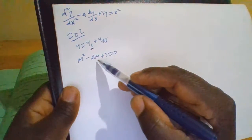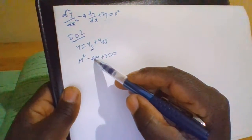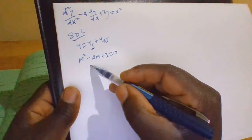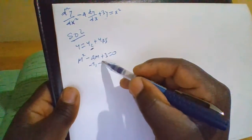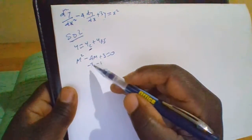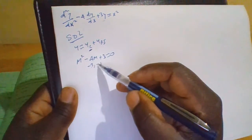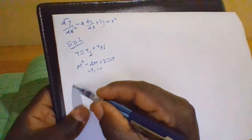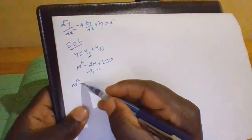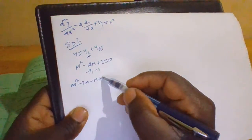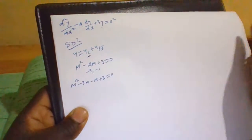We ask ourselves: what two numbers, when added, give negative 4, and when multiplied, give 3? The numbers are negative 3 and negative 1. Negative 3 plus negative 1 gives negative 4, and negative 3 times negative 1 gives 3. So this equation becomes m squared minus 3m minus m plus 3 equals zero.